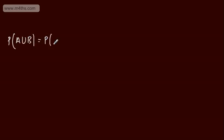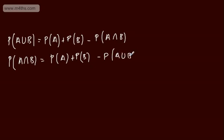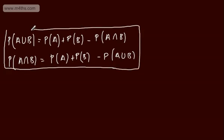In the last video, we looked at the addition rule for probability. The addition rule is given as the probability of A union B equals the probability of A plus the probability of B minus the probability of A intersection B. We can rearrange this so that the probability of A intersection B equals P(A) plus P(B) minus P(A union B). In this video, we're going to work through a few different situations, looking at different ways to solve problems — sometimes purely with formula, sometimes with a Venn diagram, and sometimes a combination of the two.